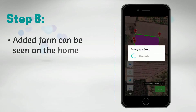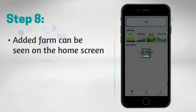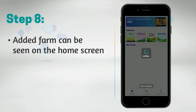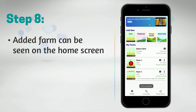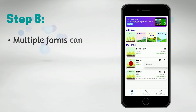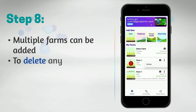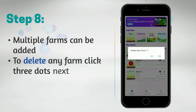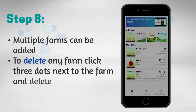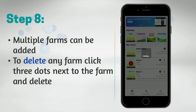The added farm will be visible in the 'My Farm' section on the home screen. You can add multiple farms in a similar way, and you can also delete a farm.